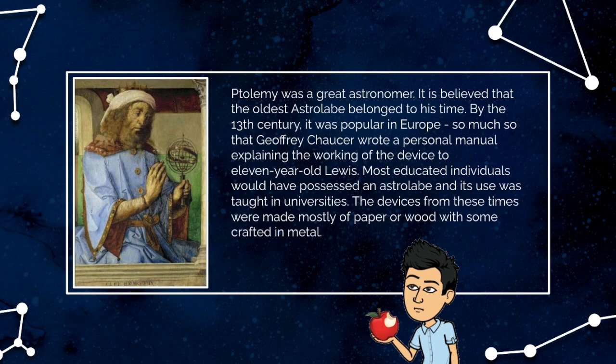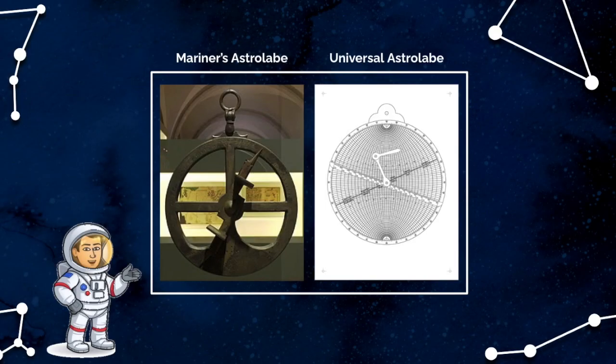So much so that Geoffrey Chaucer wrote a personal manual explaining the working of the device to eleven-year-old Lewis. Most educated individuals would have possessed an astrolabe and its use was taught in universities. The devices from these times were made mostly of paper or wood with some crafted in metal.